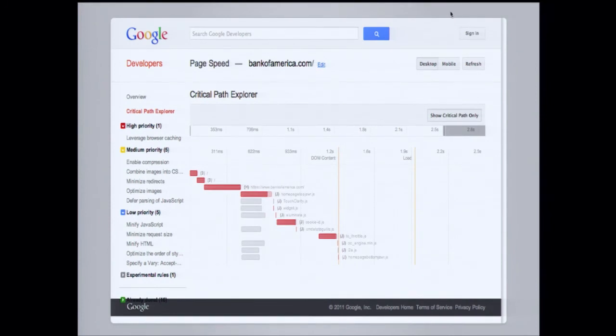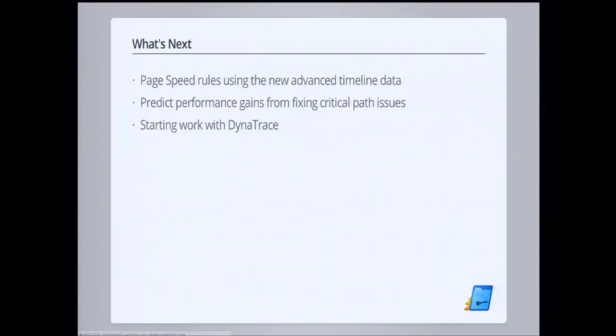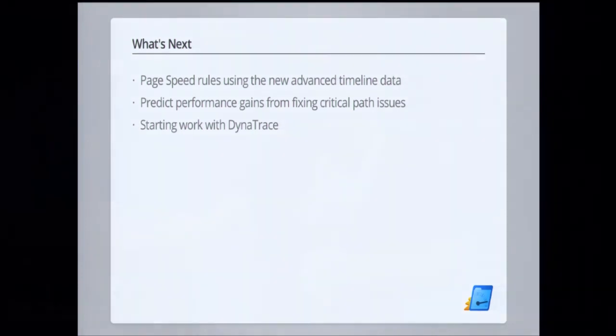That is the Critical Path Explorer in four minutes. This is just the beginning — we have a lot of really interesting data here. We want to build new PageSpeed rules on top of this, and we want to be able to give you predictions: if you remove this from the critical path, if you optimize this piece, then you can save 20% of your page load time, or your first paint event will be 30% sooner. We think those are really useful statistics for web developers. We're also working with Dynatrace to get some of this data into their tools to bring this analysis to an even wider audience. If you want to hear more about PageSpeed or mod_pagespeed, there's a talk this afternoon — empirical results of mod_pagespeed — by Josh Morantz and Matthew Steele at 4:20.